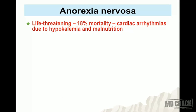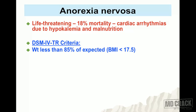Anorexia nervosa is the first important disorder. It is a life-threatening disease with a mortality rate of 18%. The cause of mortality is cardiac arrhythmias due to hypokalemia and malnutrition — decreased potassium. According to DSM-IV-TR criteria, the weight must be less than 85% of expected weight, and BMI must be less than 17.5 for the diagnosis of anorexia nervosa.